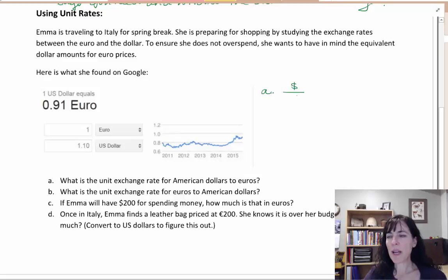The euro, by the way, has this funky E shape that looks like this - it looks like a C and then it has two lines in the middle. That's the symbol for euros. So we want dollars to euros, and we have one U.S. dollar is 0.91 euros. So we can write it like this: one dollar to 0.91 euros.